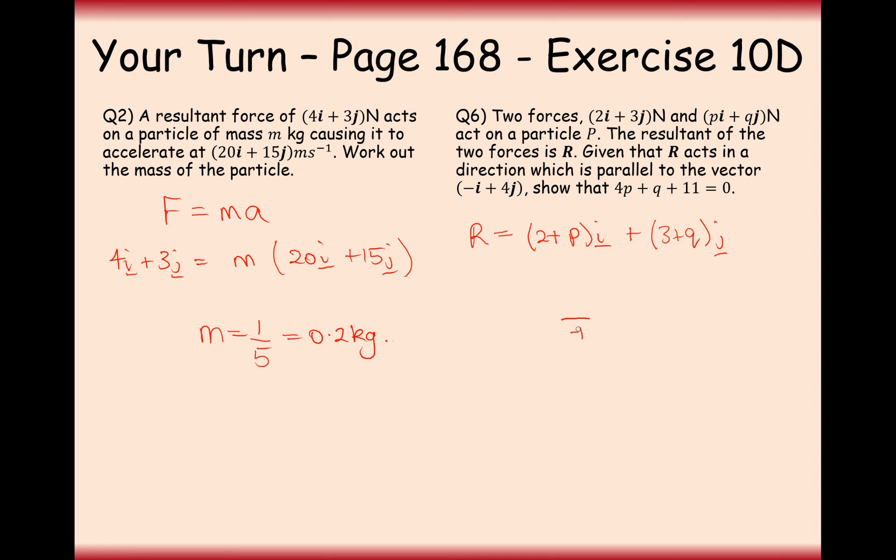Now, if we want it to be parallel to that vector there, we want it to go left by 1 and up by 4. So what we need then is for the x component to be timesed by minus 4, and then it would be perfectly equal to each other. So we're going to times the i component by minus 4. So it's minus 4 times by 2 plus p, and that's going to equal 3 plus q. And then the two components should be equal then. So we're going to get minus 8 plus, so take away 4p equals 3 plus q. And adding everything onto the right-hand side, we're going to get 0 equals 4p plus the q plus the 11, which is basically what we've got there. So we've shown it pretty well.